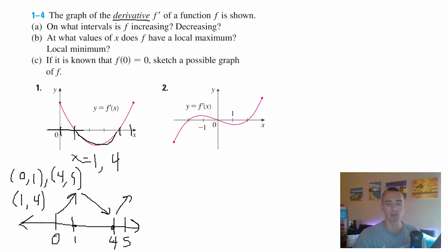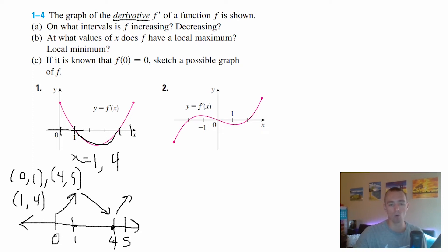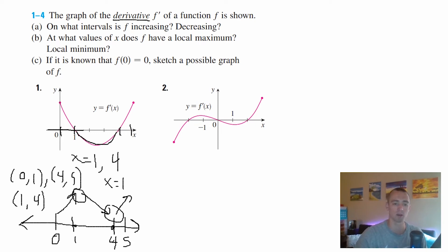So the intervals where f is increasing are zero to one and four to five. The interval where f is decreasing is from one to four. It's important when writing interval notation to use round parentheses, because f is not increasing or decreasing at these endpoints — it has a slope of zero at those points. For part b, if f is going up from zero to one and then at one starts going back down, that point is a local maximum. So f has a local maximum at x equals one, and a local minimum at x equals four, where the function goes from decreasing back to increasing.